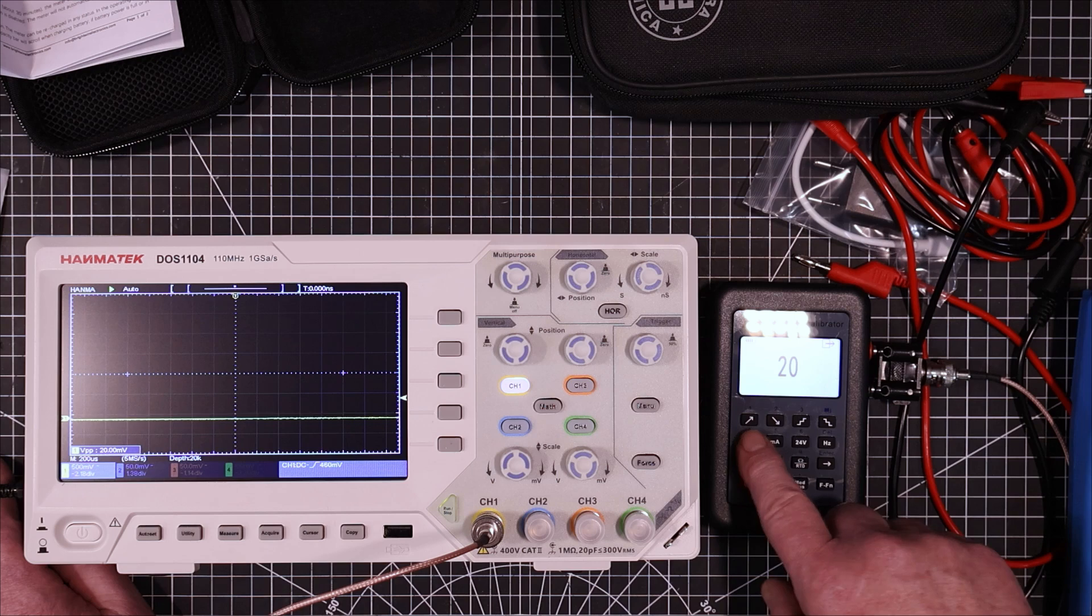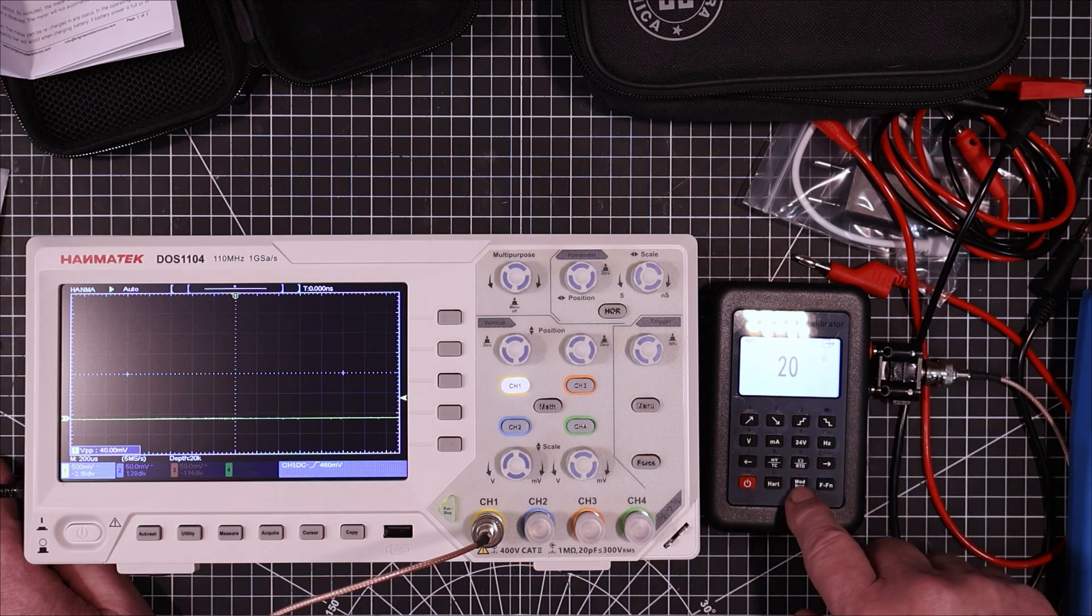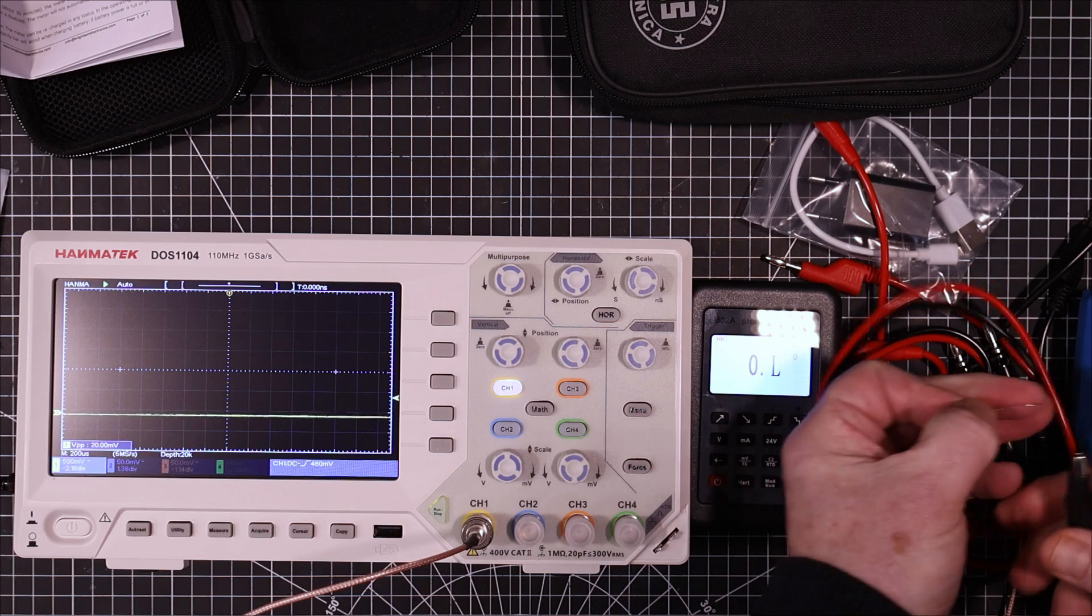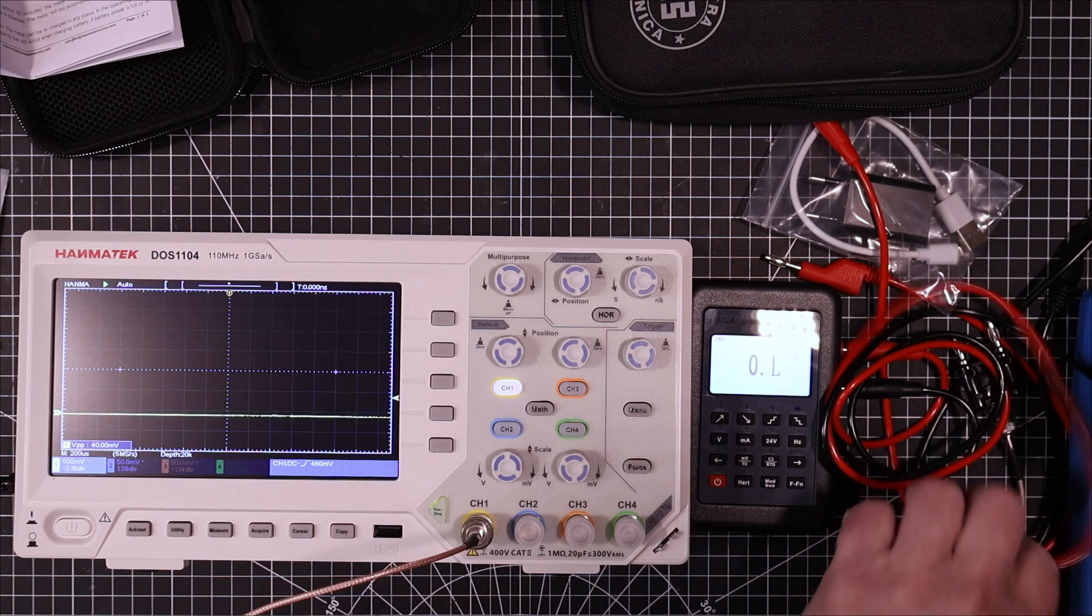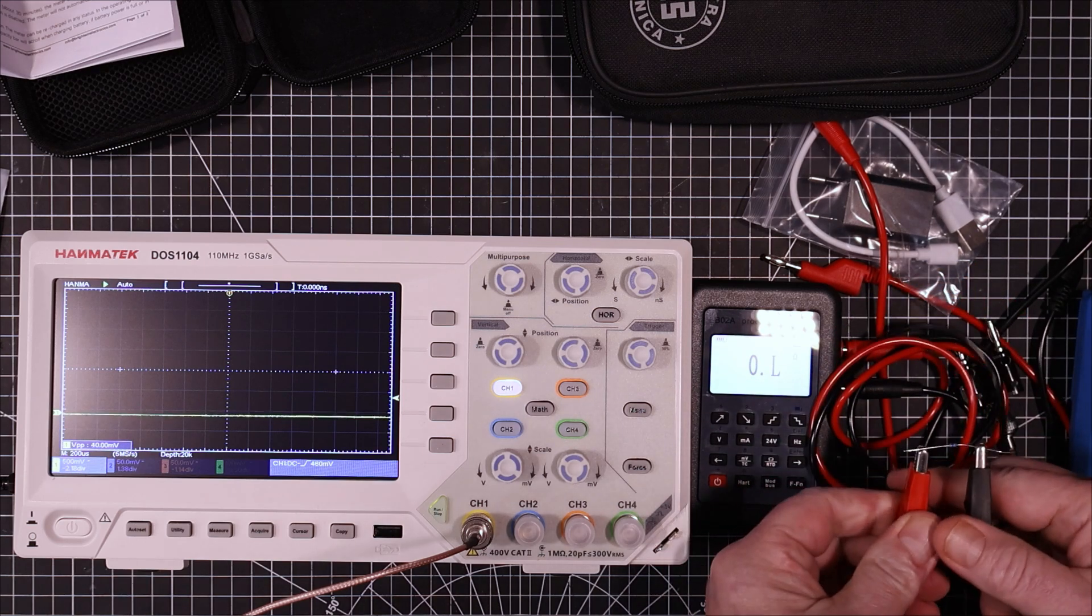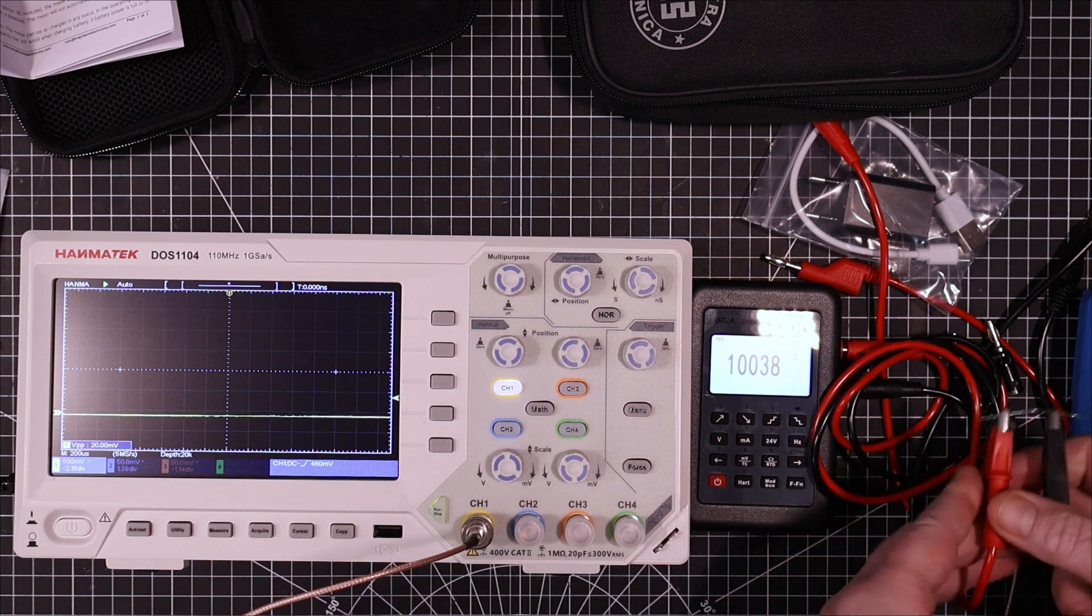It can make measurements too on any of these scales. So if we want to input resistance. Okay. This is a 10k ohm resistor. Let's see what it makes of this. Very good.